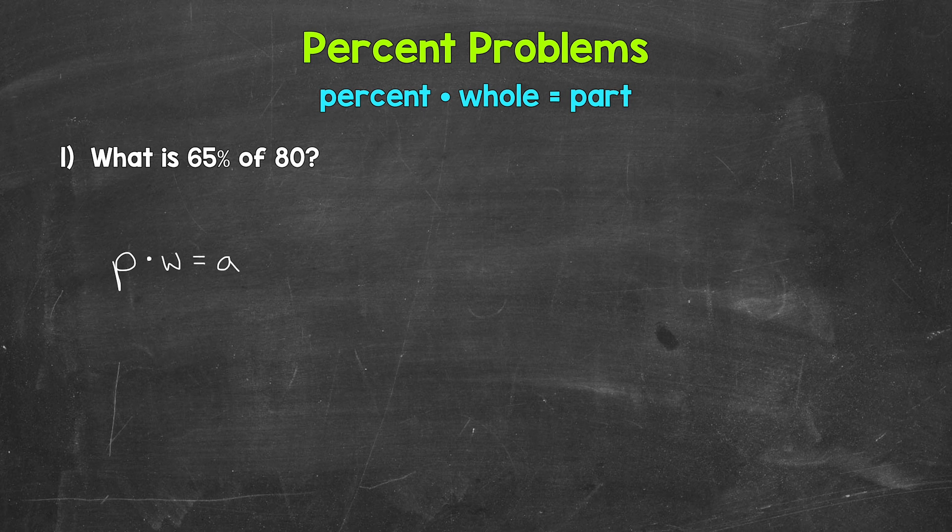So P for percent times W for whole equals A for part. Percent times whole equals part. Next, we can plug in what we are given and keep a variable for the unknown. Let's start with the percent, which is 65%. And we actually want to write the percent as a decimal within our equation in order to work through everything. We're going to end up multiplying here, so we want the decimal form.